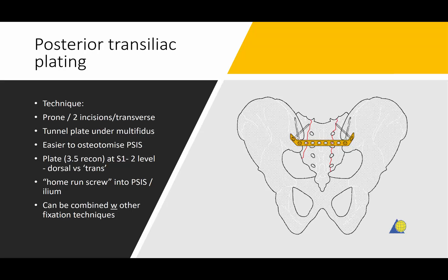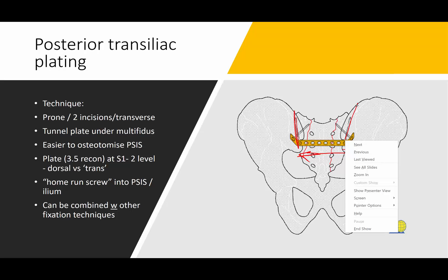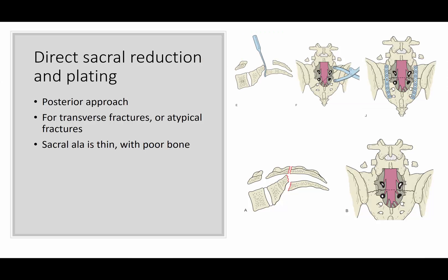With this technique, you have to be prone — it's an open approach. You make two incisions, one on each side, and tunnel underneath. If necessary, you can osteotomize the PSIS — I've done this frequently — taking an osteotome to create a recessed trough so the tunneling is easier and you don't need a double bend in the plate. Usually it's a 3-5 reconstruction plate. You can also use a so-called home run screw going from the PSIS into the ilium. And you can still combine it with an iliosacral screw if you leave room.